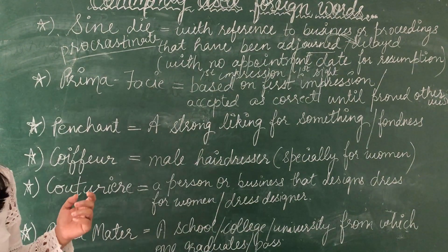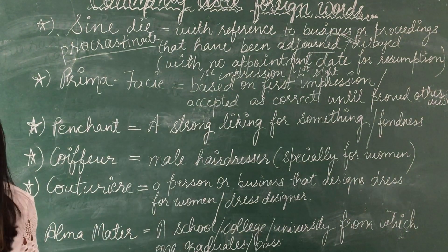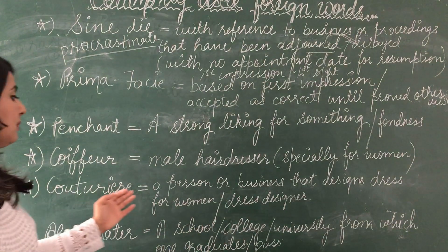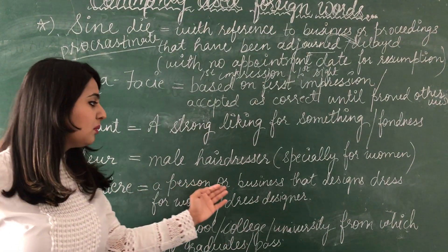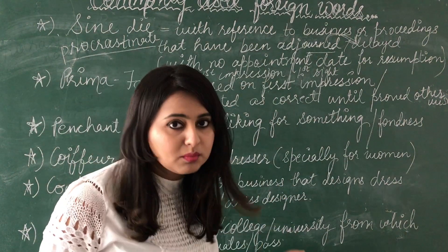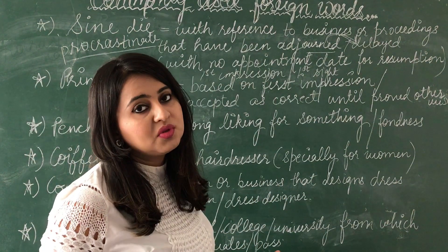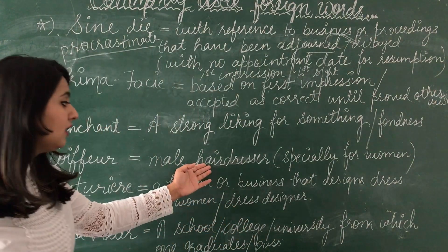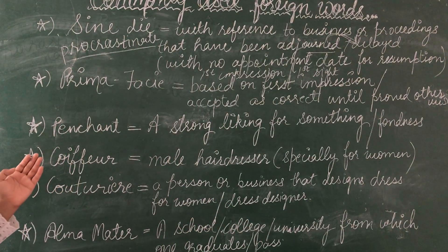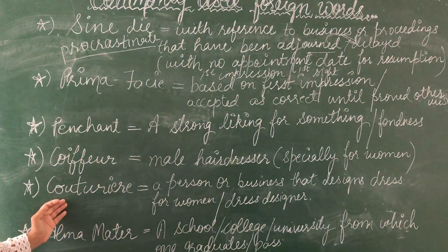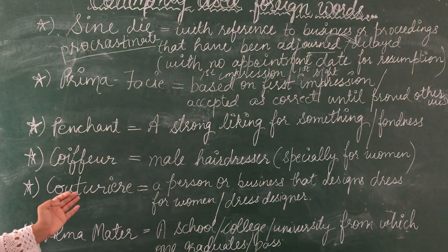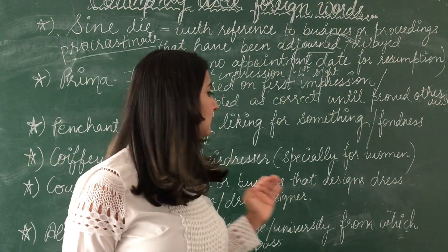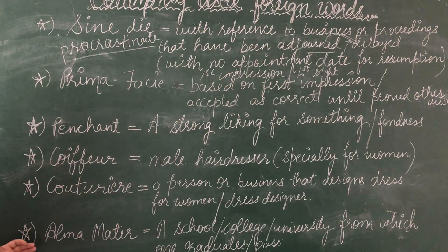Next is 'couturiere', spelled C-O-U-T-U-R-I-E-R-E. We pronounce it like 'couturiere'. Couturiere means a person or a business that designs dresses for women — basically what we can also call a dress designer. So the hairdresser was the coiffeur, and the dress designer is the couturiere.